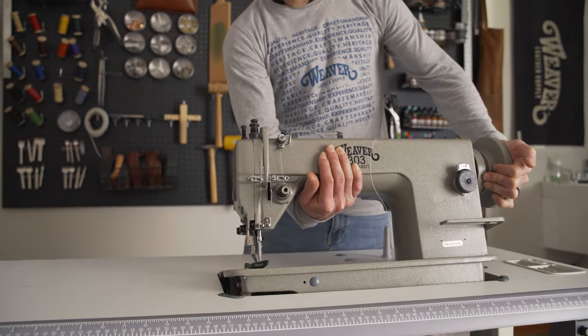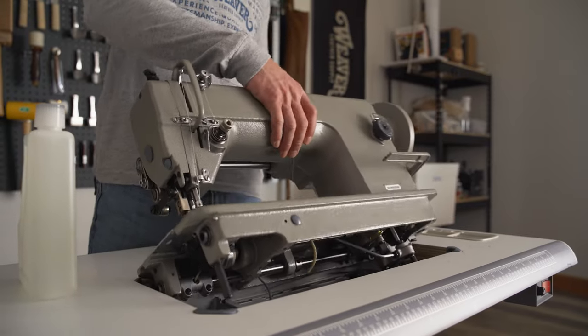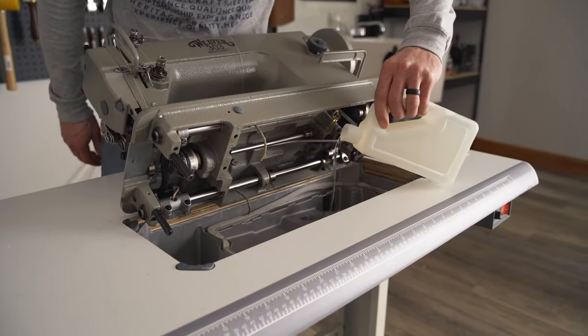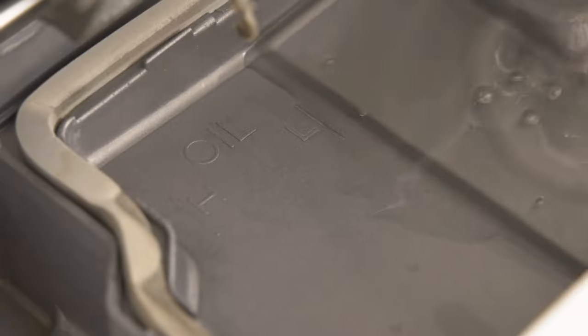Next, we want to add our oil. Tilt the machine head back and pour the included oil into the oil pan, ensuring that it fills between the high and low levels.